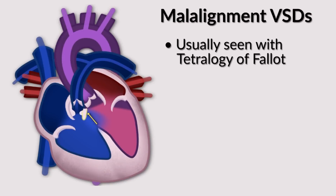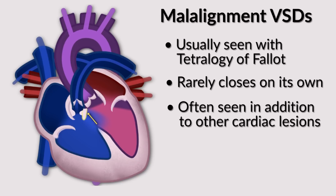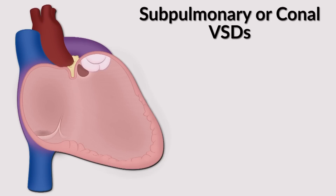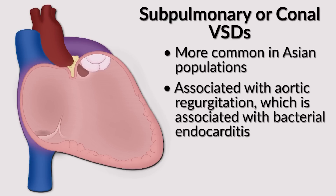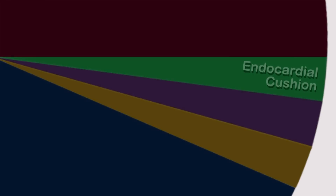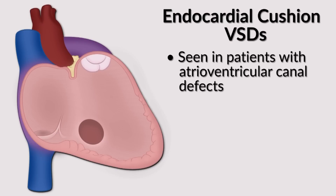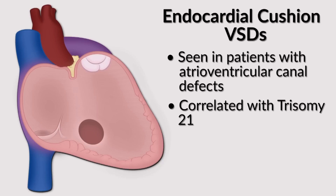The last three types rarely, if ever, close on their own. There's the malalignment defect, as is usually seen with tetralogy of Fallot, which rarely closes on its own and is often seen with other cardiac lesions. There's the subpulmonary or conal type, which also rarely closes — some say the diagnosis itself is an indication for surgical repair. This type is more common in the Asian population and is associated with aortic regurgitation and increased risk of bacterial endocarditis before and after repair. Finally, there are endocardial cushion defects, classically seen in patients with atrioventricular canals, with a well-known correlation to trisomy 21.